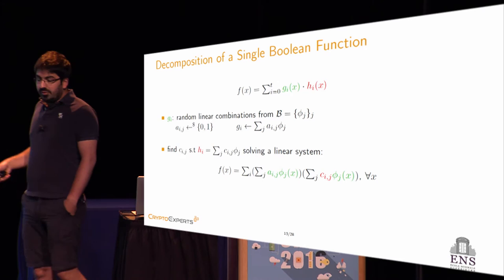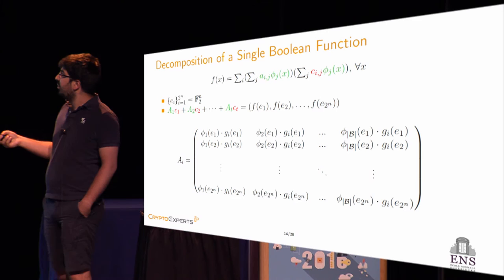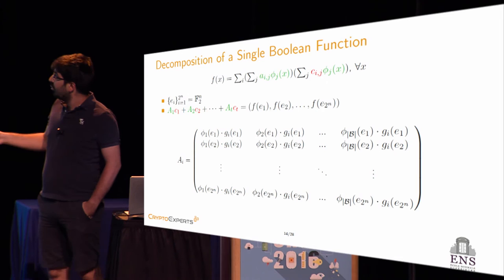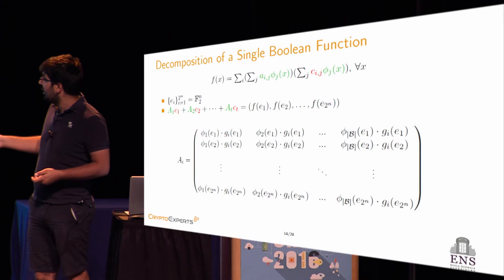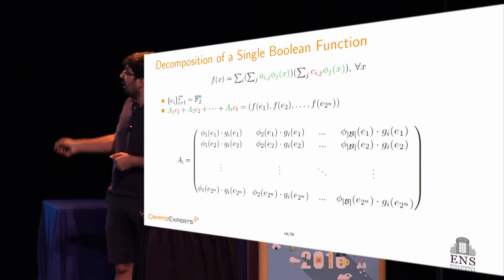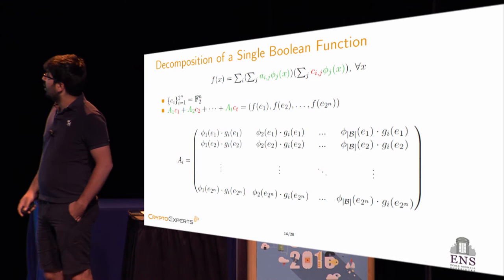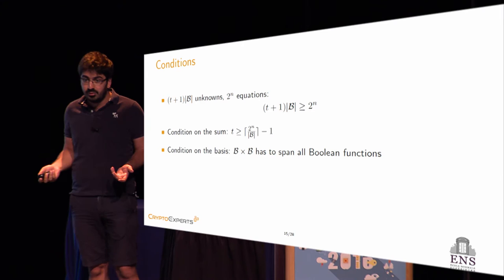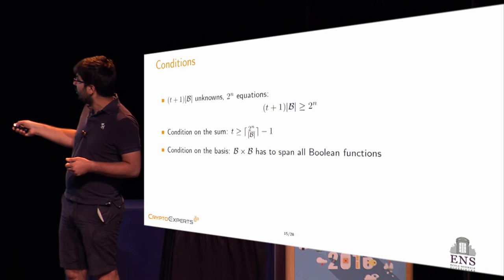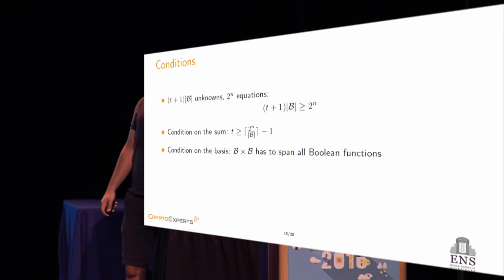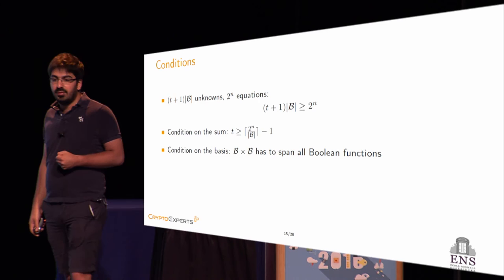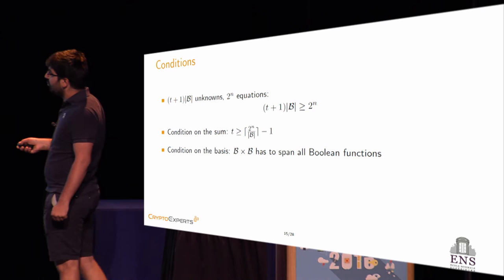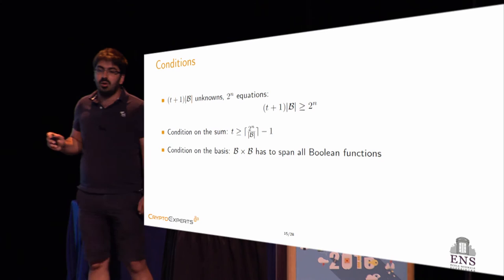To solve this linear system with simple linear algebra, let the e_i be the vector of all possible vectors over F2^N. We rewrite the linear system as the sum of matrices A_i — where all elements are known — times the c_i coefficients we need to retrieve, equal to all possible evaluations of the Boolean function. For this system to have a solution, we need certain conditions. The first is that T+1 times the size of B must satisfy 2^N, meaning T must be at least 2^N divided by the size of B, minus 1. Importantly, the larger the basis B, the smaller T needs to be, and therefore the fewer decomposition products we need.